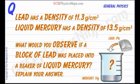Lead has a density of 11.3 grams per centimeter cubed, and liquid mercury has a density of 13.5 grams per centimeter cubed. Lead is less dense than liquid mercury, which means for every centimeter cubed of the material, lead will have less mass than the mercury. So what would you observe if a block of lead was placed into a beaker of liquid mercury? Explain your answer.